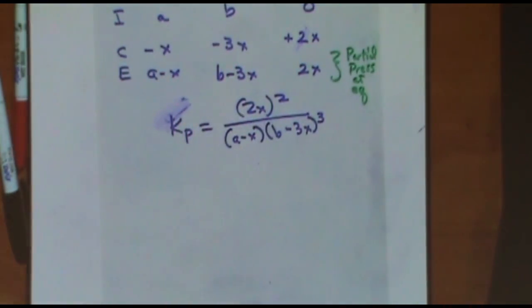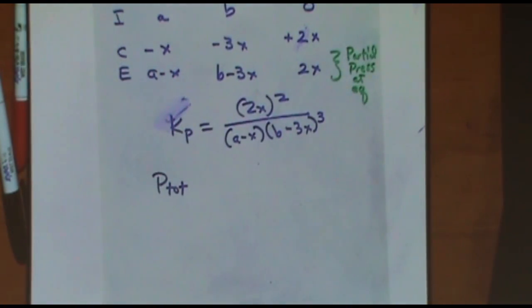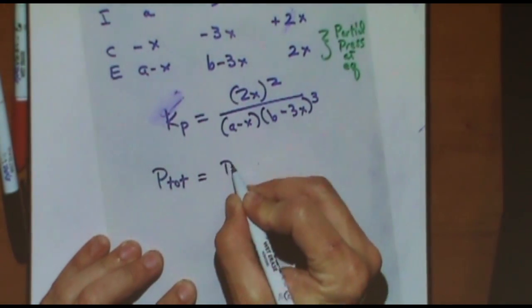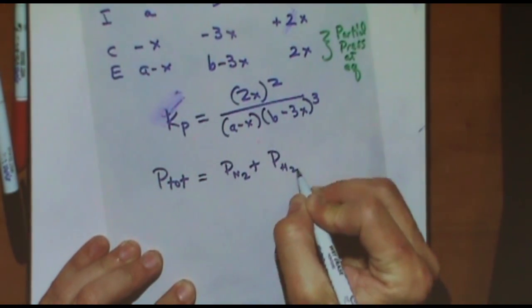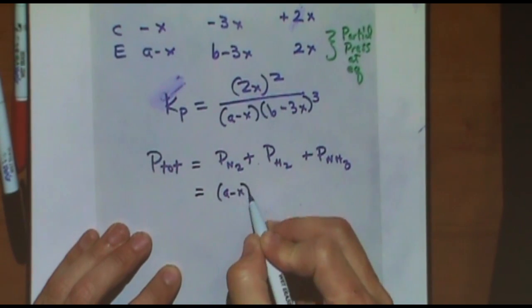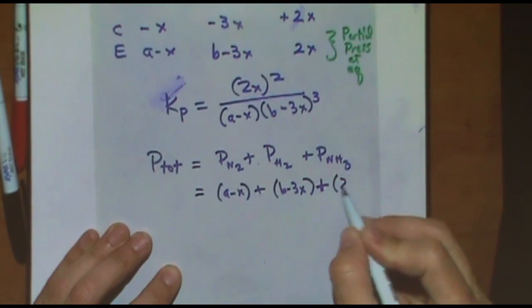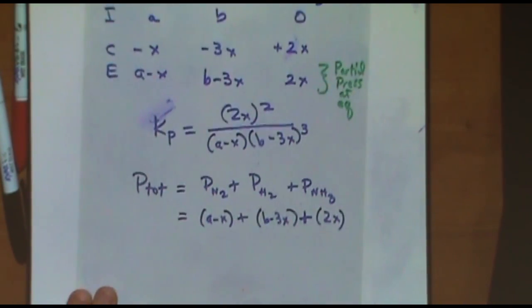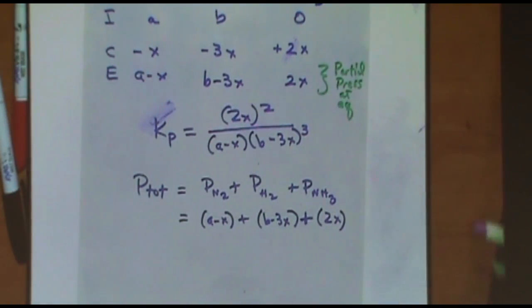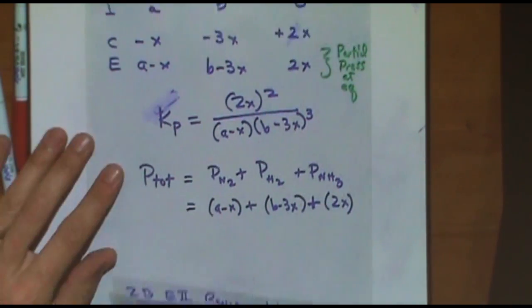So we could have you solve for the equilibrium partial pressures, which would be this. These would be the partial pressure at equilibrium. I could also have you find the total pressure. If you're asked for the total pressure, that's really an equilibrium of pressure, which is the partial pressure of N2 plus the partial pressure of H2 plus the partial pressure of NH3, which from the E line is just A minus X plus B minus 3X plus 2X. So just know it's not uncommon to ask about a total pressure, which is the sum of the E line because the E line represents the partial pressures and you just sum them up to get the total pressure. Okay. So that's the only nuance that you might see in a KP problem.